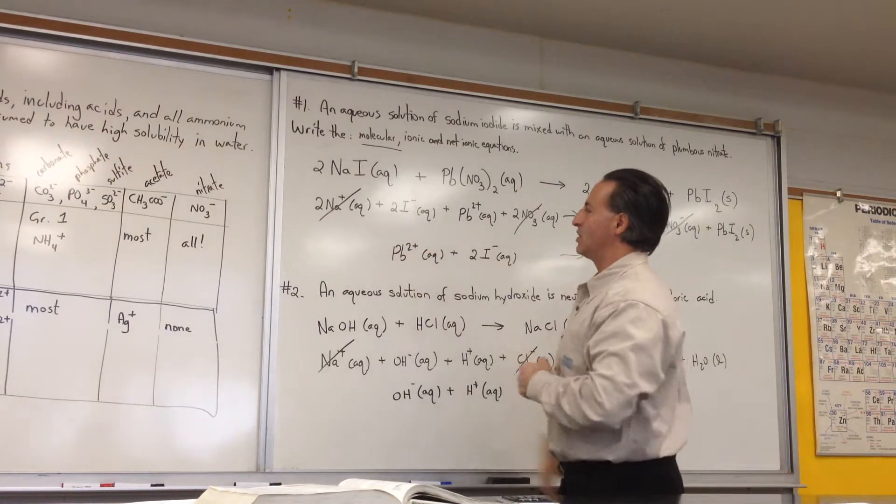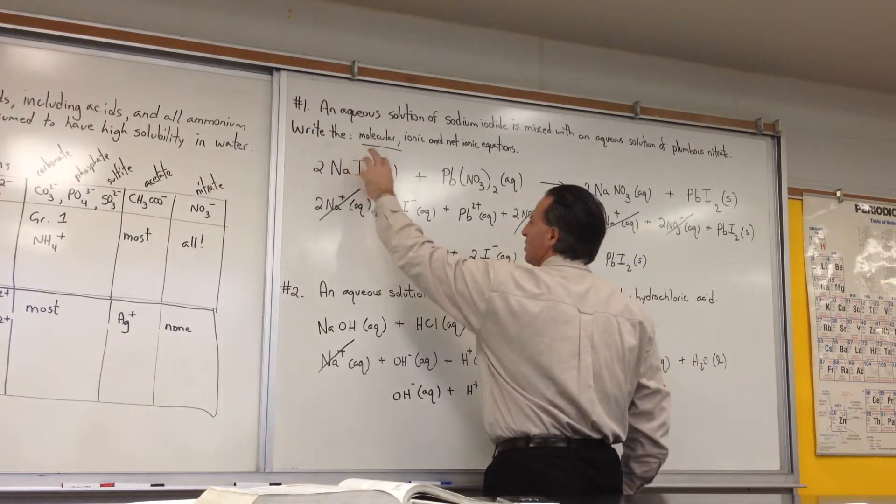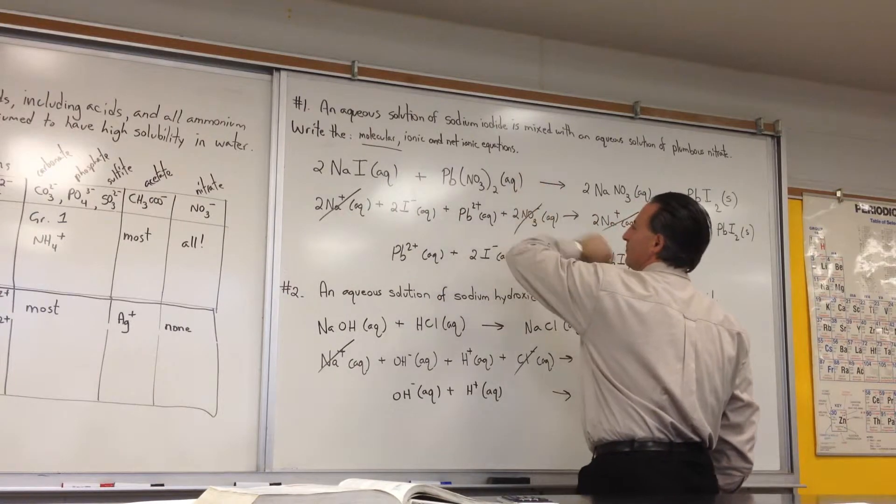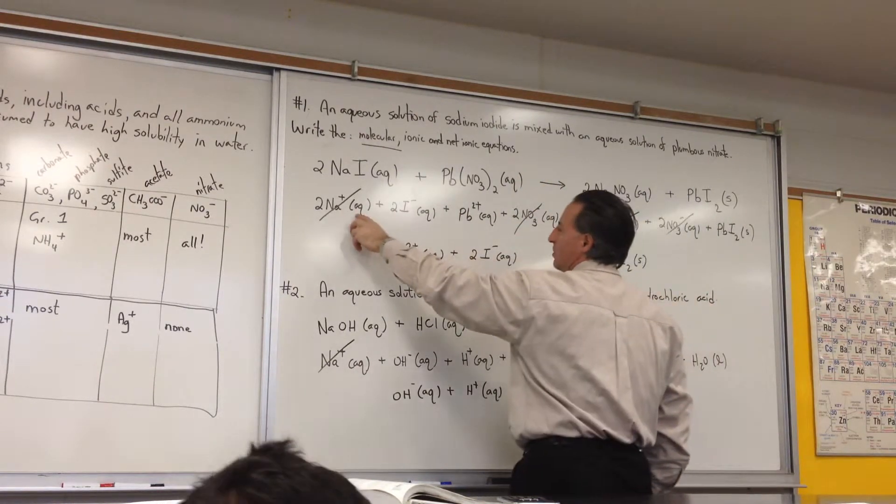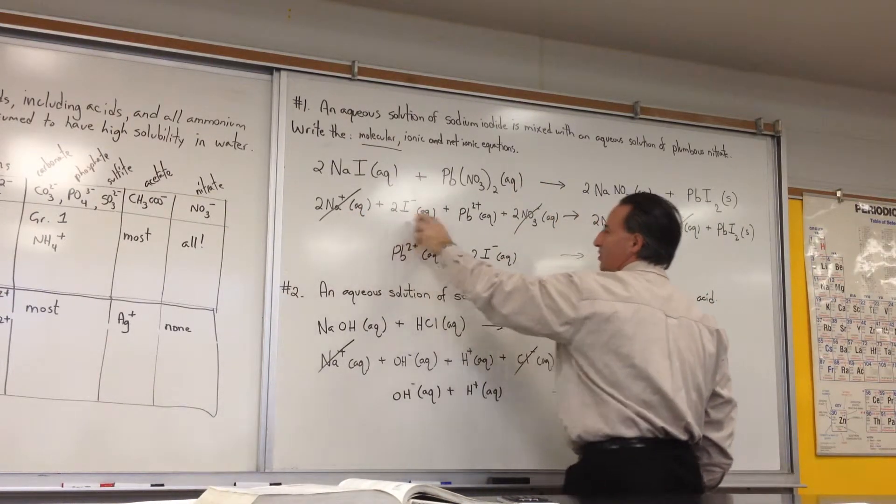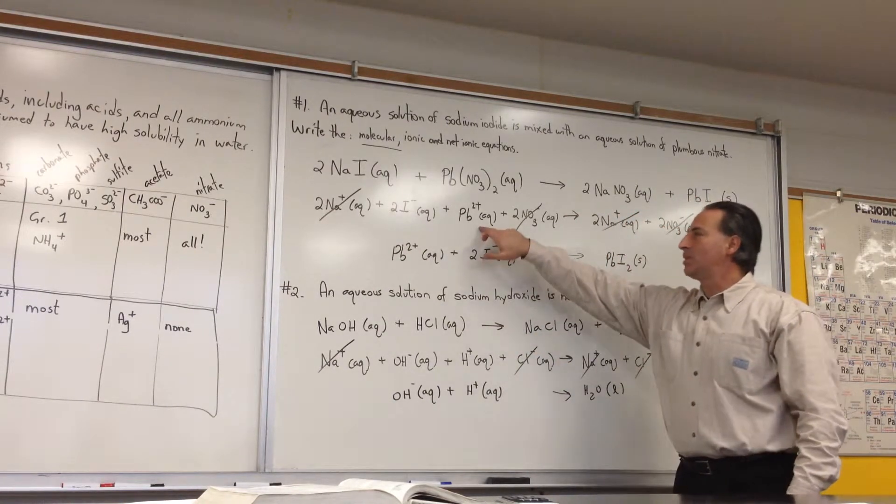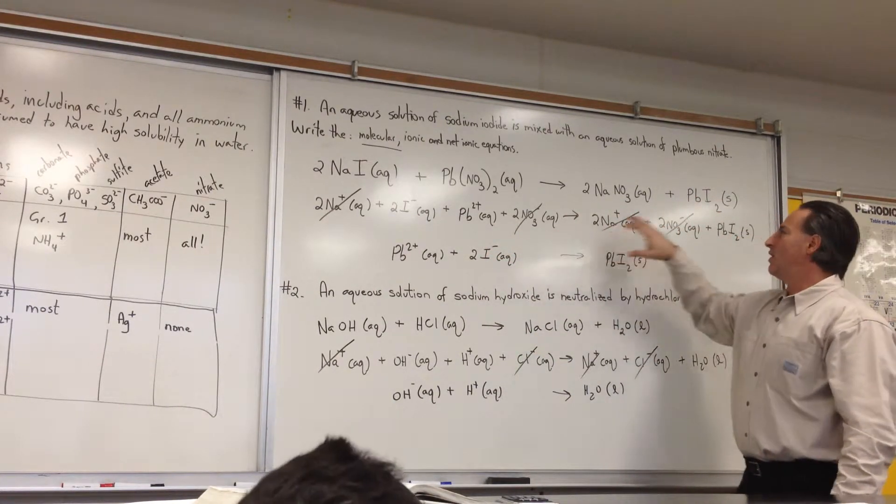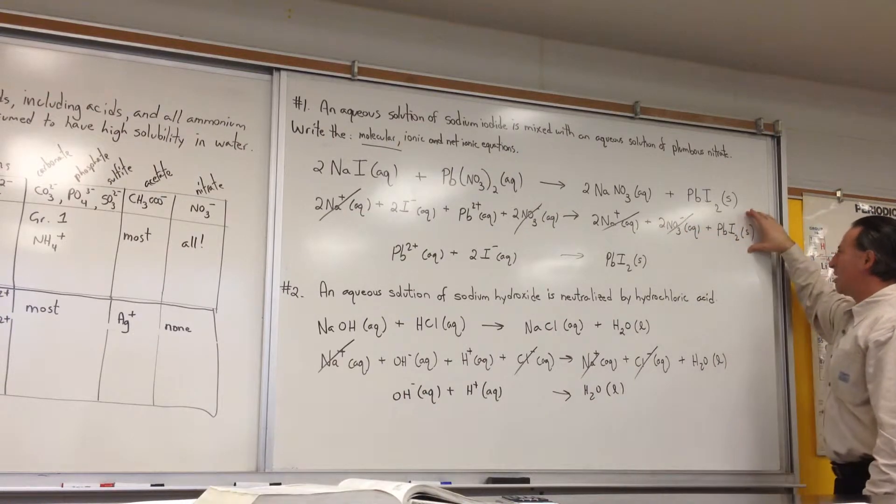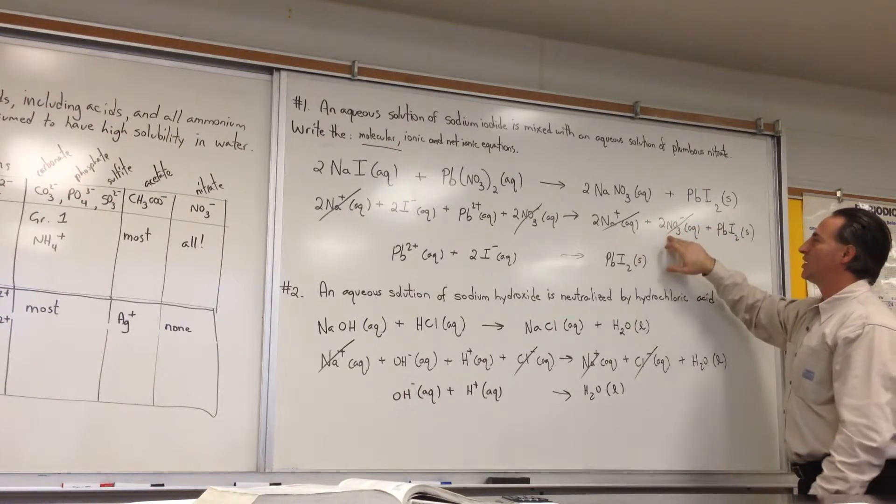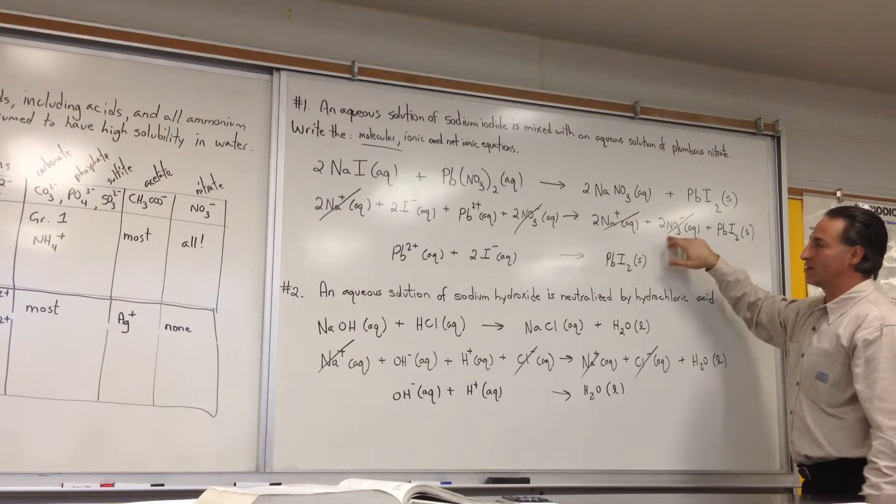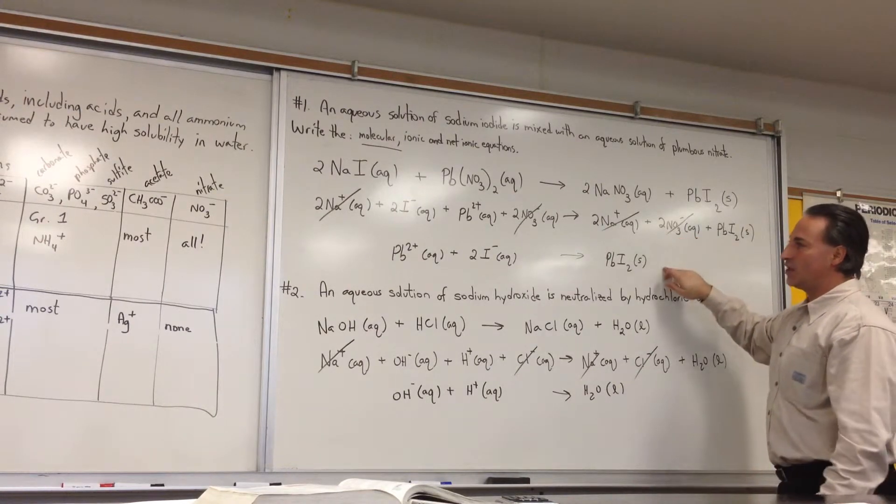Here's the ionic equation. In the ionic equation, you show each one of the species that dissociates in aqueous solution. So here's aqueous sodium, aqueous iodide, aqueous lead ion, and the nitrate anion. And on the right side, we show one of the products that forms, and the other two things that don't combine because they're soluble.